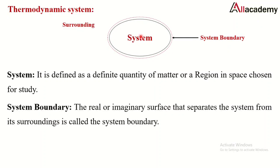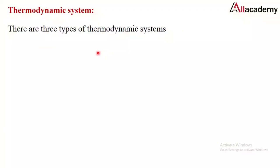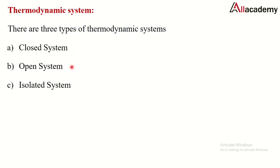The system boundary is a real or imaginary surface that separates the system from its surroundings. Anything outside the system — separated by this system boundary — is called the surrounding. There are three types of thermodynamic systems: closed system, open system, and isolated system.